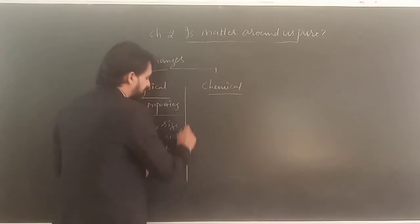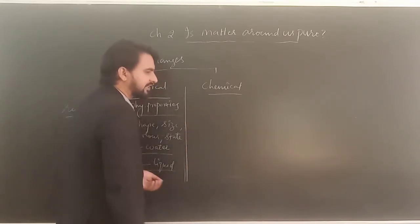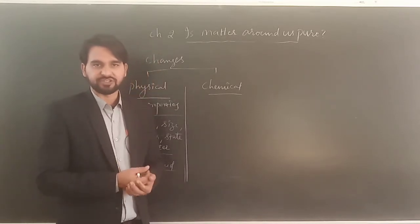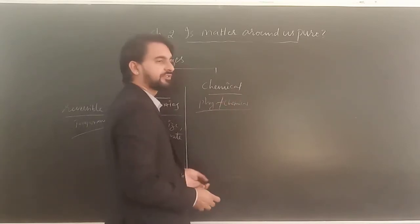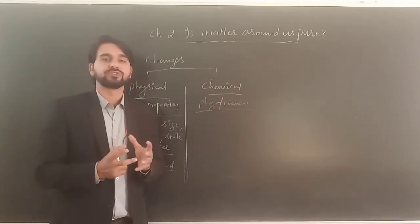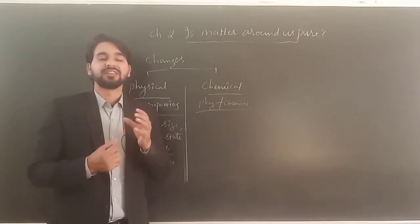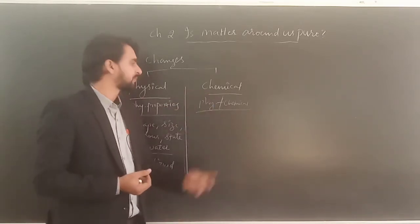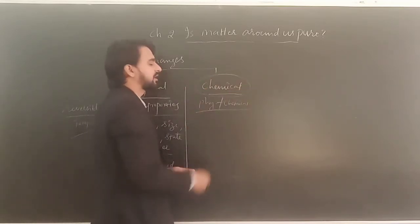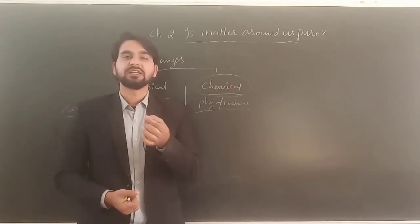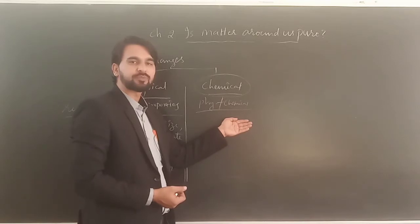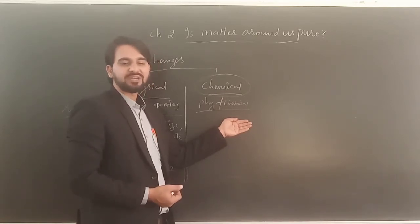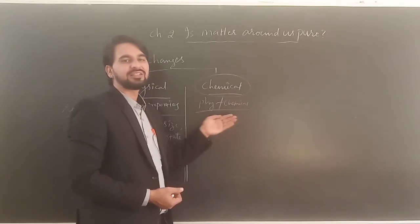Now, what are chemical changes? Chemical changes are types of changes in which not only the physical properties but also the chemical composition of the substance changes. That means the composition of which the substance is made up of is also changing. Such a type of change is known as a chemical change. When there is a change in both the physical properties and the chemical properties, that particular change can be defined as a chemical change.